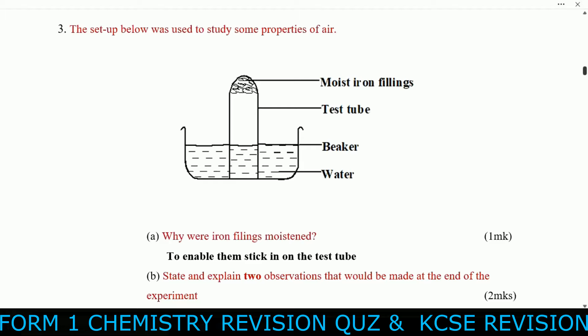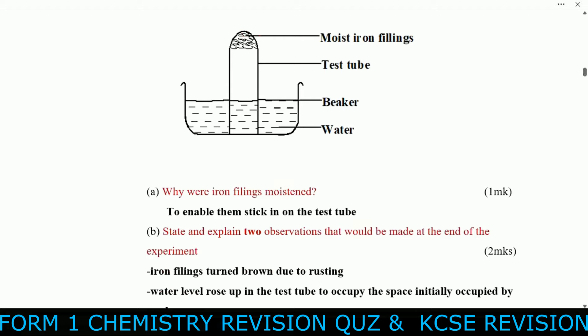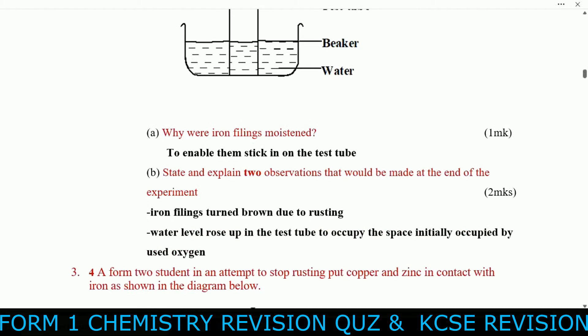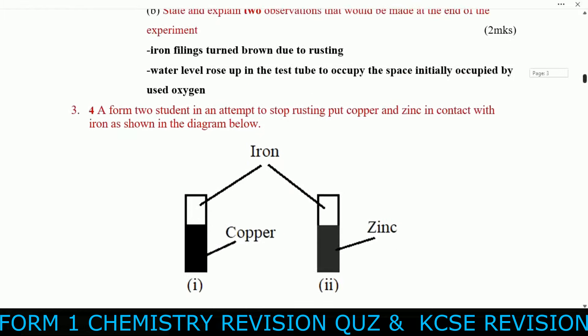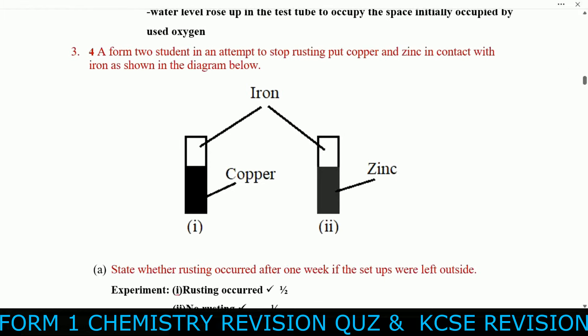State and explain two observations made at the end of the experiment. Observation one: the iron fillings turned brown due to rusting. Observation two: the water level rose up in the test tube to occupy the space initially occupied by the oxygen that was used up.